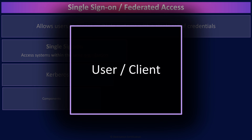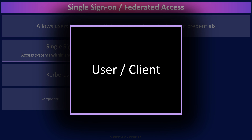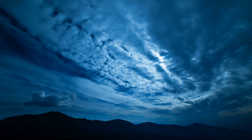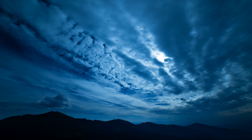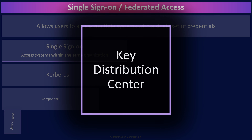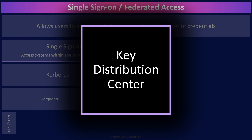The first component — or rather person — is the user or client. This is the individual that would like to gain access to services through Kerberos. Kerberos provides two services: the authentication service and the ticket granting service, both of which are contained within what is known as the key distribution center, the KDC.